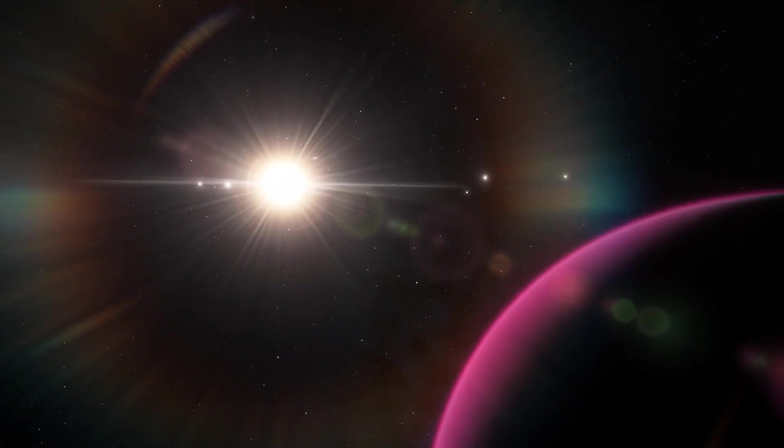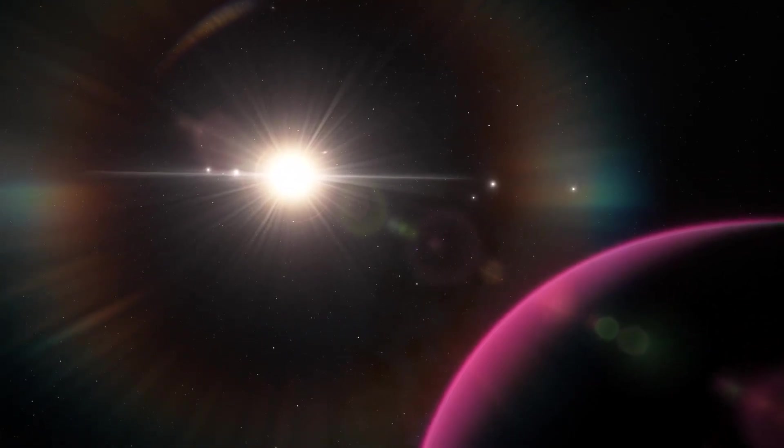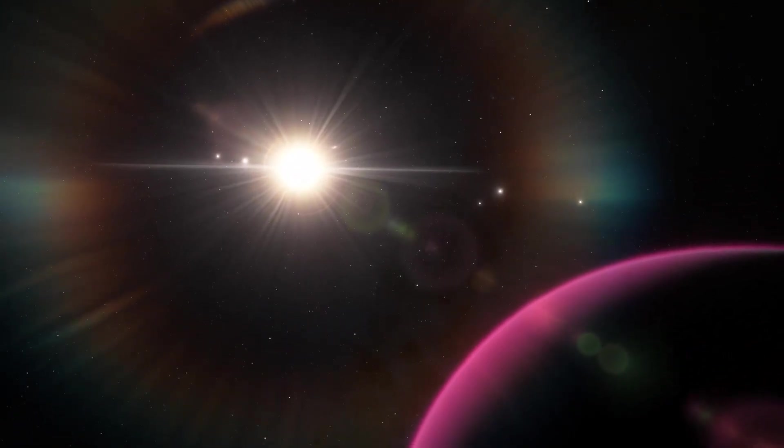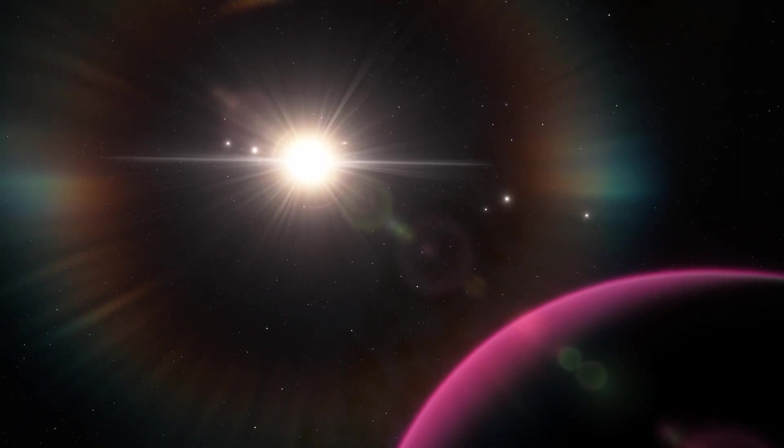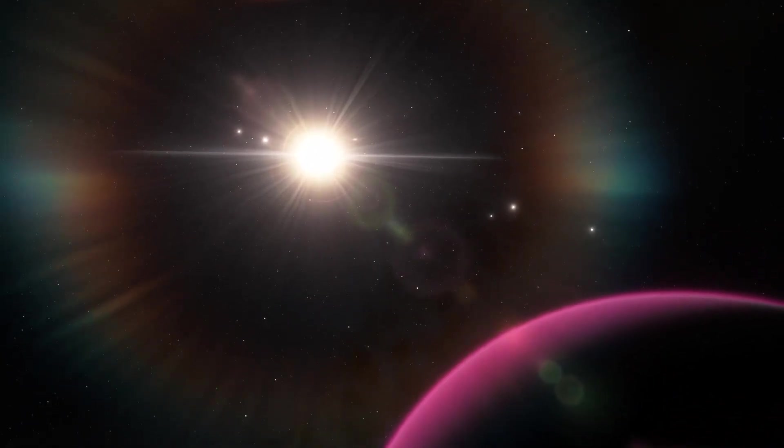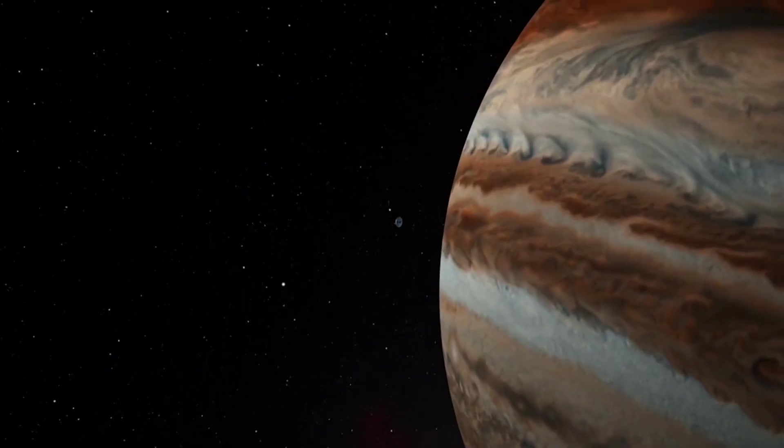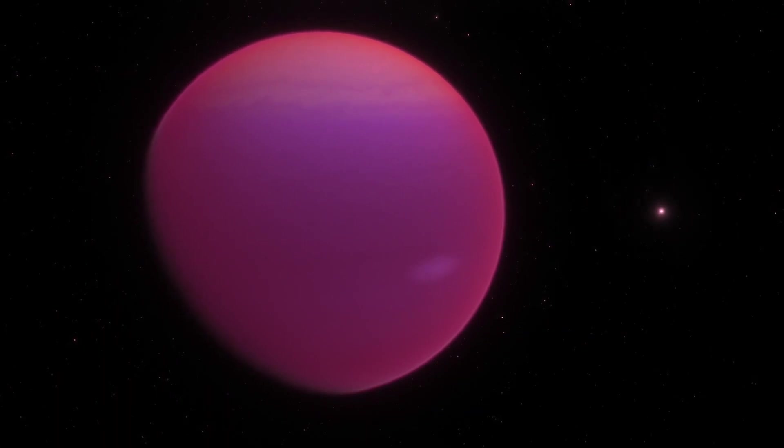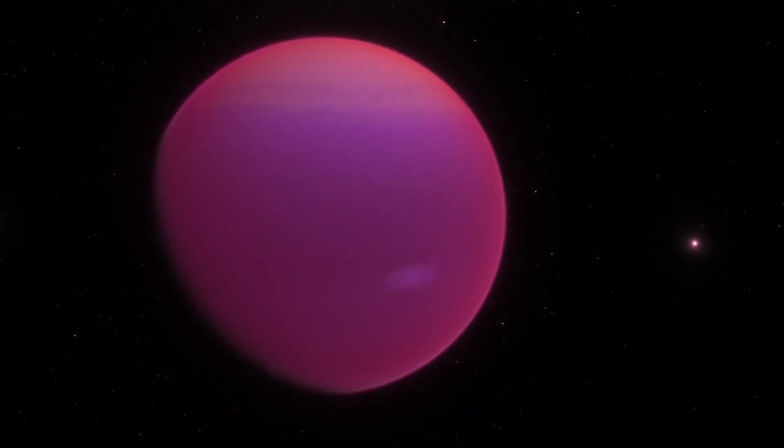GJ-504b. One of these is an extrasolar planet 57 light years away from Earth. Its designation is GJ-504b, and it is 4 times more massive but roughly the same size as Jupiter. The biggest surprise about it is that it is pinkish, an uncommon hue for a planet.